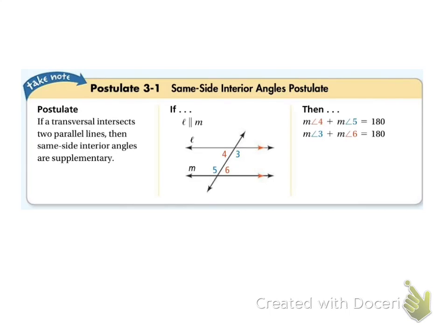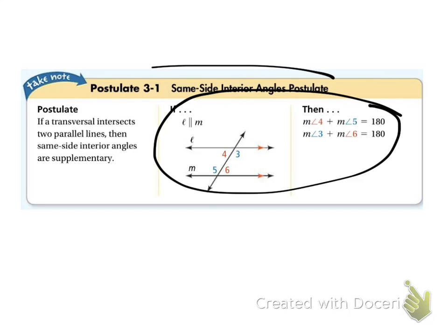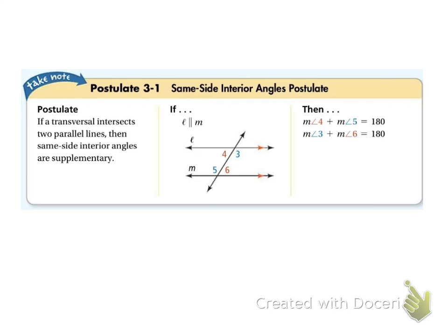Postulate 3.1 — I wouldn't write the whole paragraph for any of these theorems and postulates; I would just write the if-then with the title and the number. So, if lines are parallel, then the same side interior angles add up to 180. So 6 plus 3 gives me 180, and 5 plus 4 gives me 180.